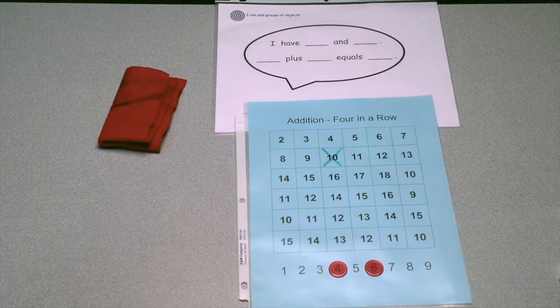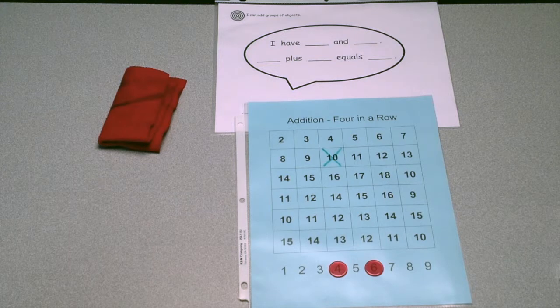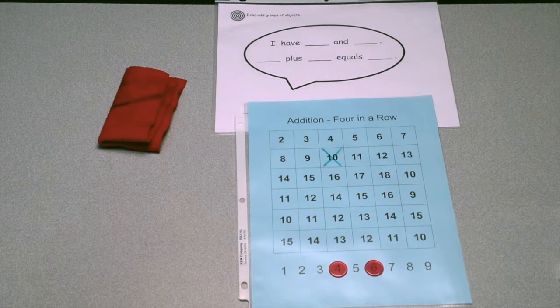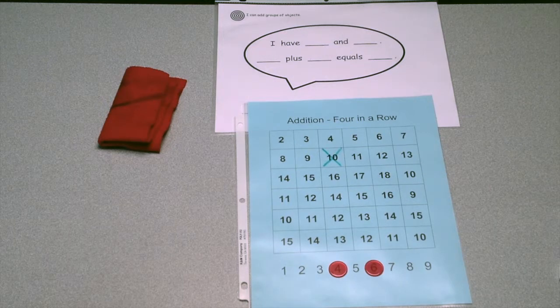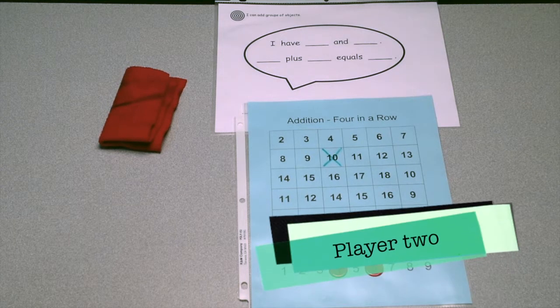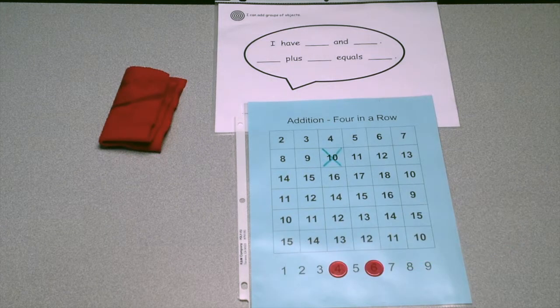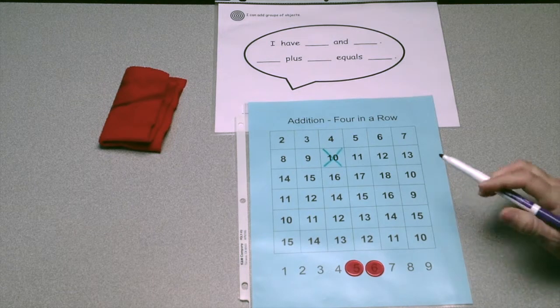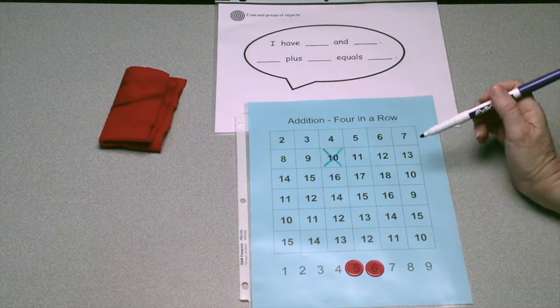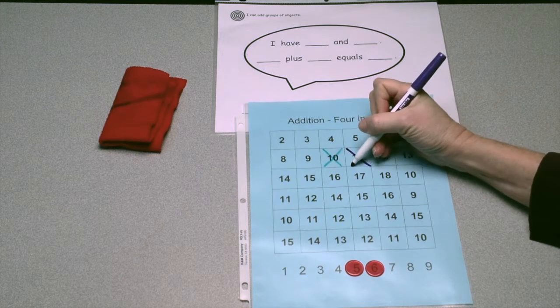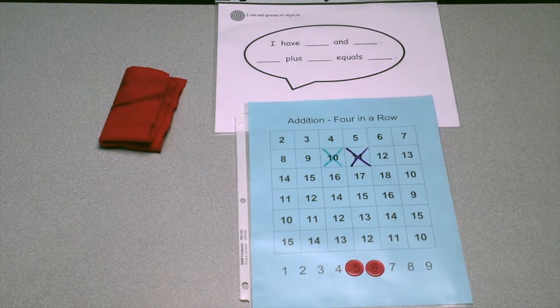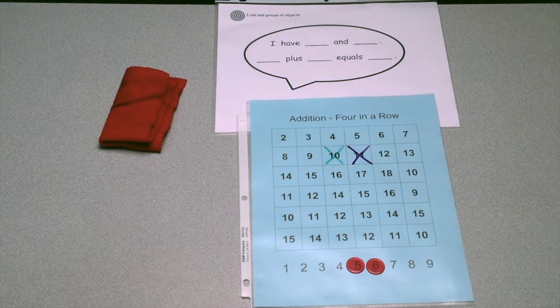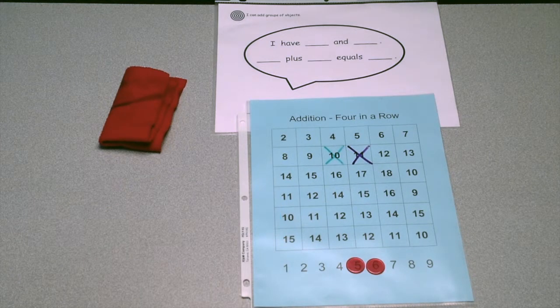Players must think carefully about which number on the board they want to cover and then consider whether or not they can make the equation that will produce that number by moving only one of the game pieces. I want to get to 11, so I'll move the piece on 4 to the number 5. Now I have 5 and 6. 5 plus 6 equals 11.